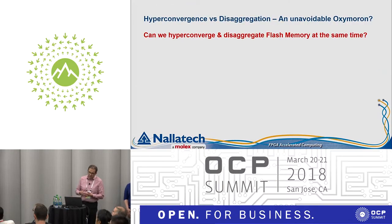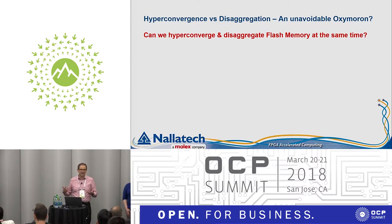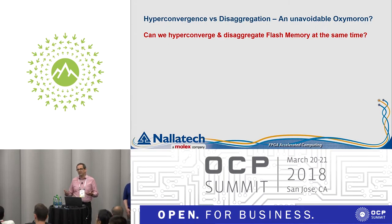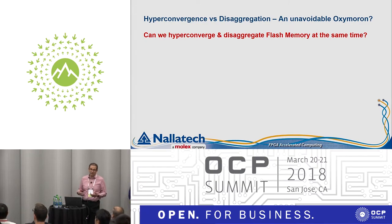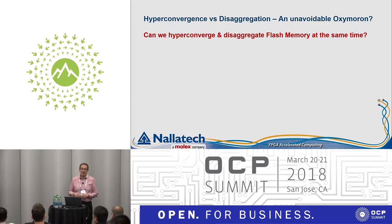I wanted to start with the buzzwords we've heard a number of times already in this conference: hyperconvergence versus disaggregation. In a true sense, they're really quite an oxymoron. The question we're really asking here is: can we hyperconverge and disaggregate flash memory at the same time and actually get the benefits of both?